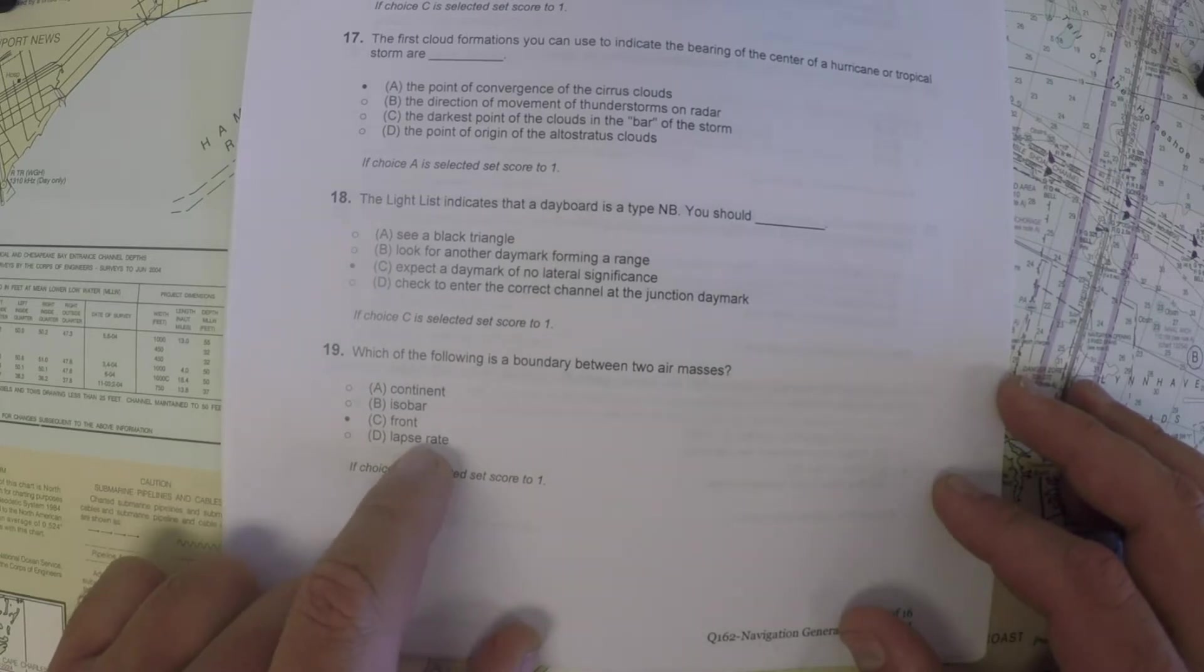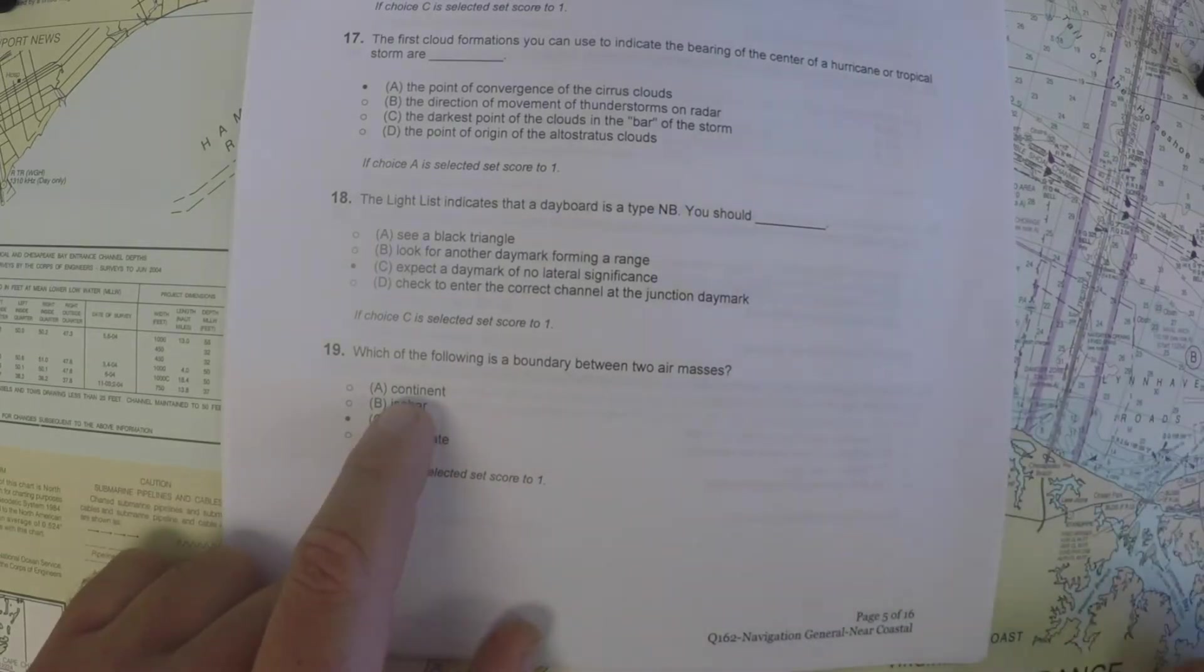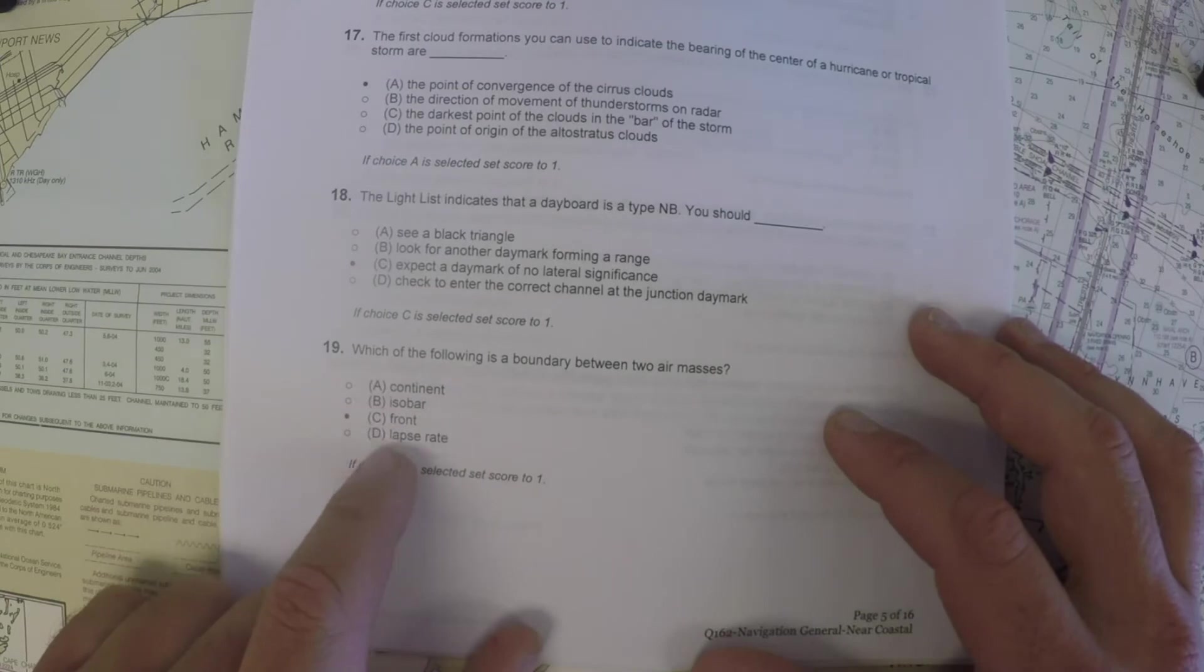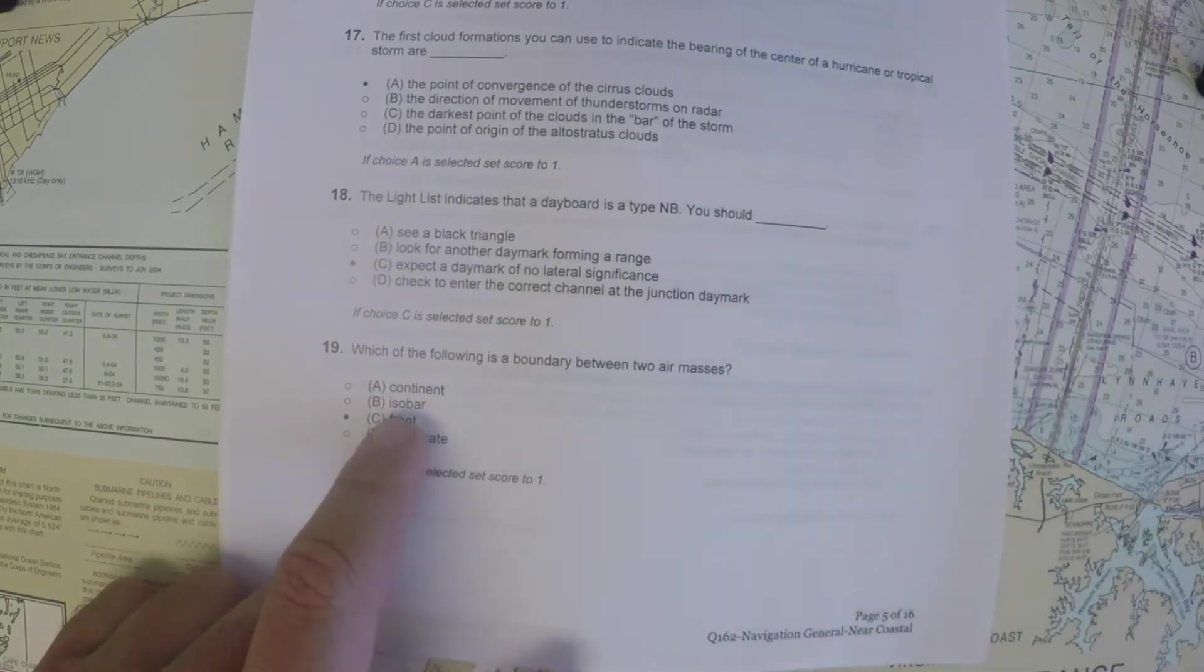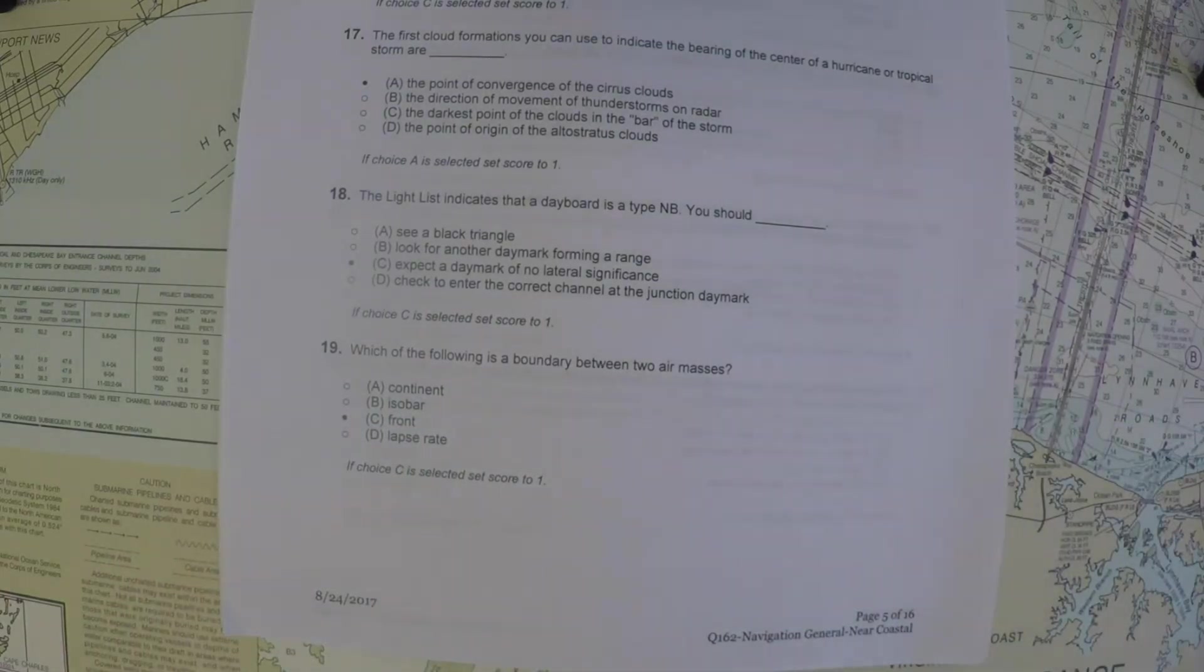Well, three of these have to do with meteorology and weather. Continent doesn't really, I guess, so it's not continent. Isobars, those are lines of equal atmospheric pressure.